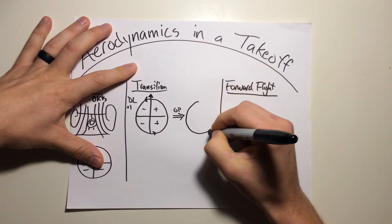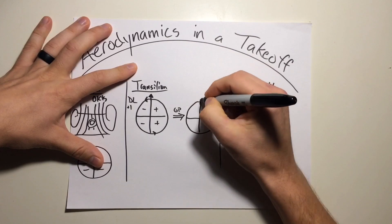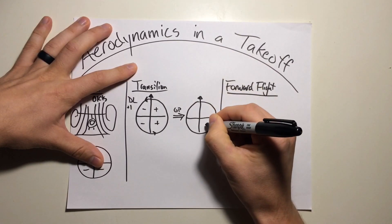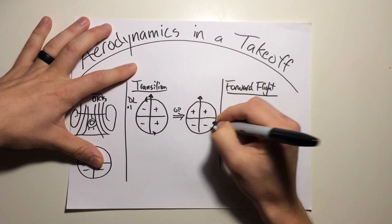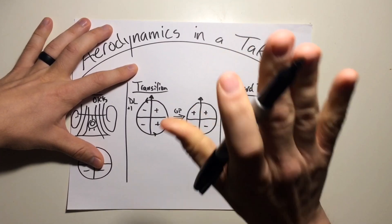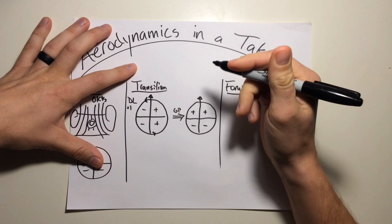So this actually becomes, when rotated 90 degrees around, this rotates to the front half of the disc, and this rotates to the aft half. So this results in more lift on the front half of the disc than the aft half of the disc.